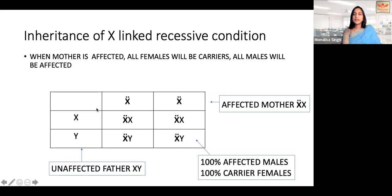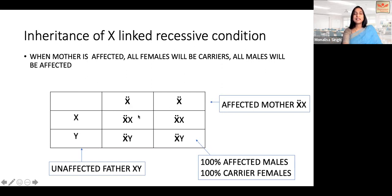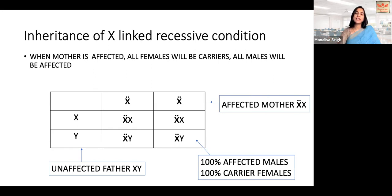If the mother is affected with an X-linked recessive condition, both her alleles are mutated (X', X'). In this case, drawing the box: all males will have the disease (X'Y — affected) and all females will be carriers (X'X — carrier). Though it is a recessive condition, males will always express the disease because they have only one X chromosome. So in this scenario, 100% of males are affected and 100% of females are carriers.